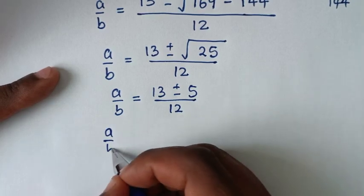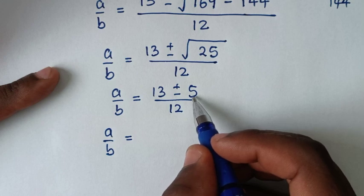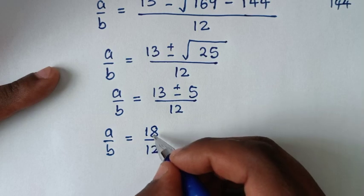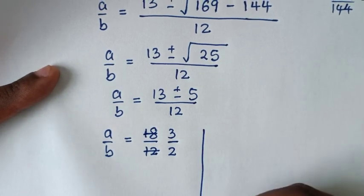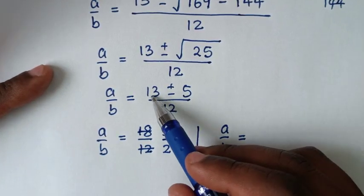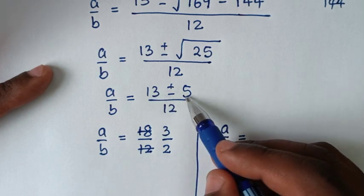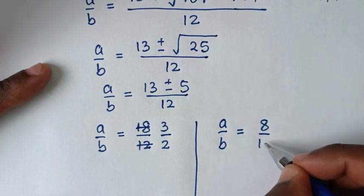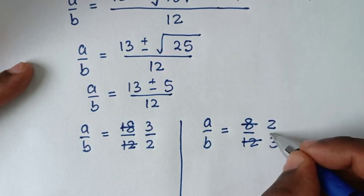From here we have two solutions. First: a/b = (13 + 5)/12 = 18/12 = 3/2 (simplified by dividing by 6). Second: a/b = (13 - 5)/12 = 8/12 = 2/3 (simplified by dividing by 4).